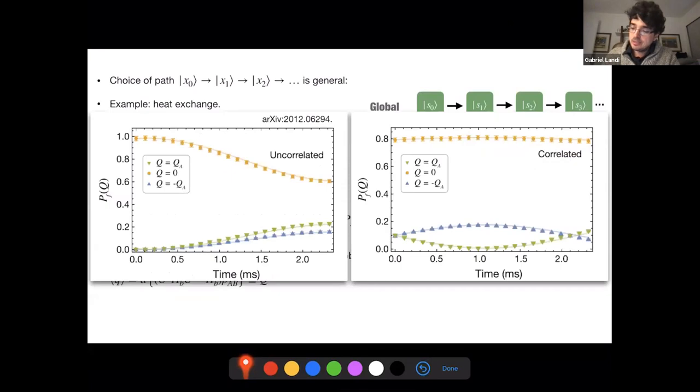And here, I just showed experimental data of the probability distribution. So we can now write down the full probability distribution, P of Q. And this just compares the uncorrelated with the correlated case. So we can actually not only talk about the average heat, but we can talk about a full distribution of heat within this scenario.